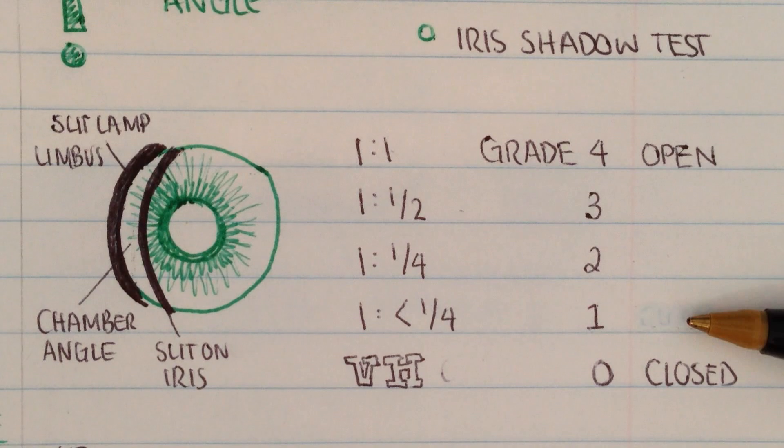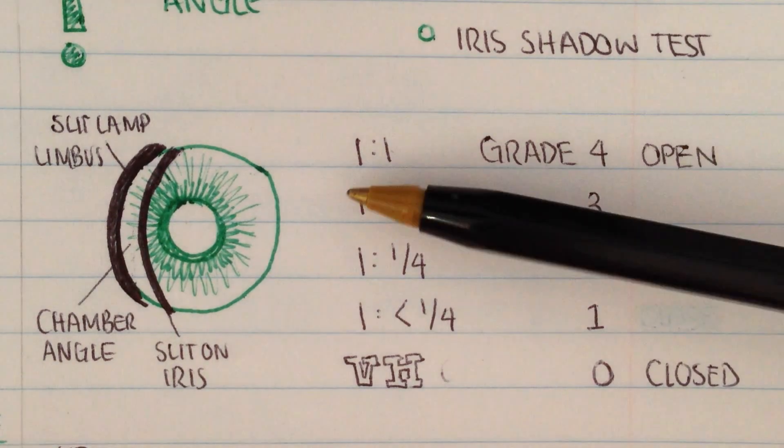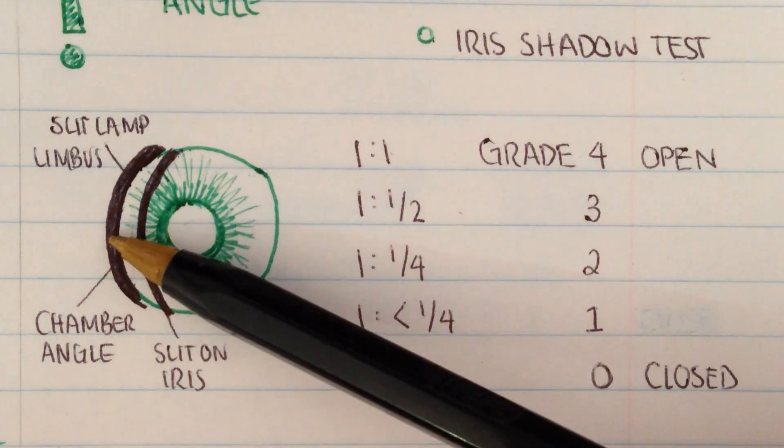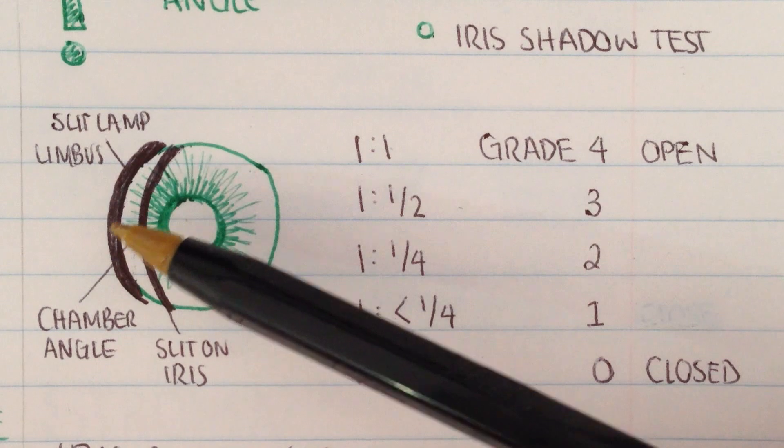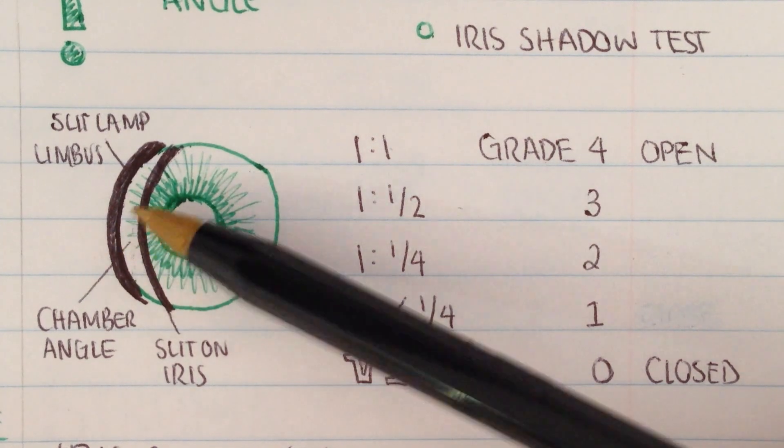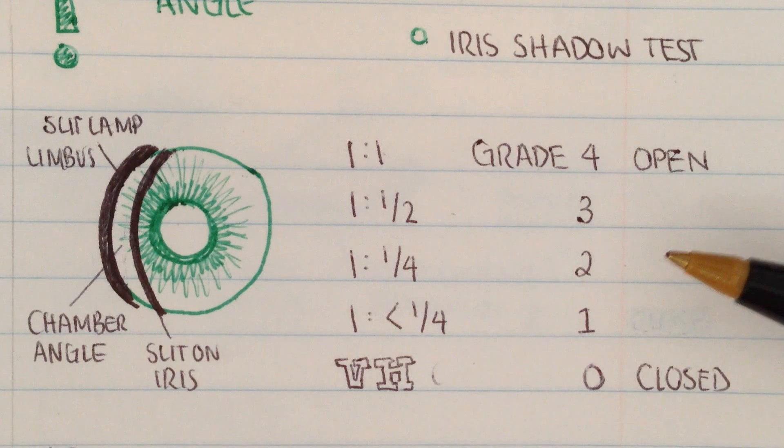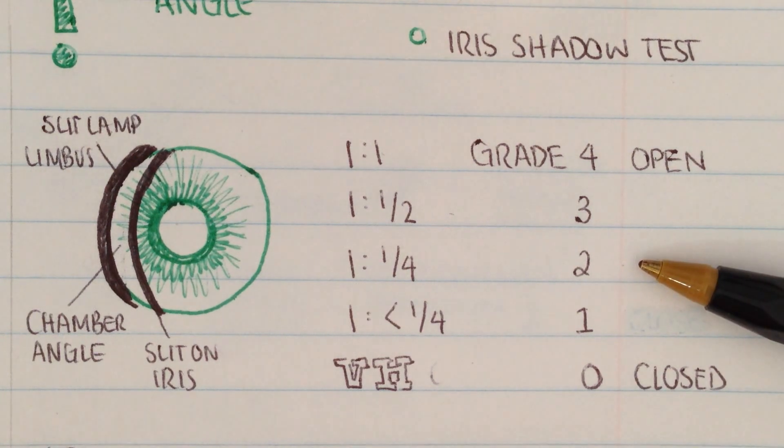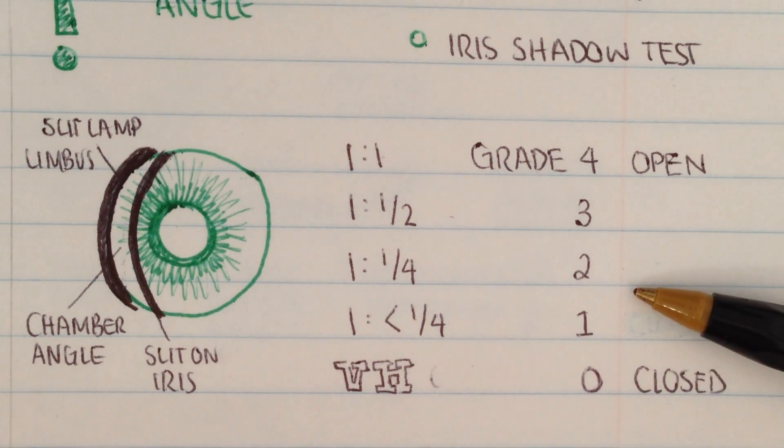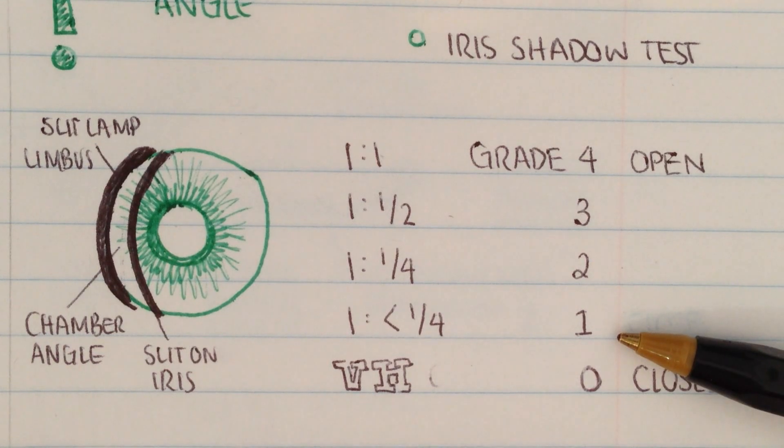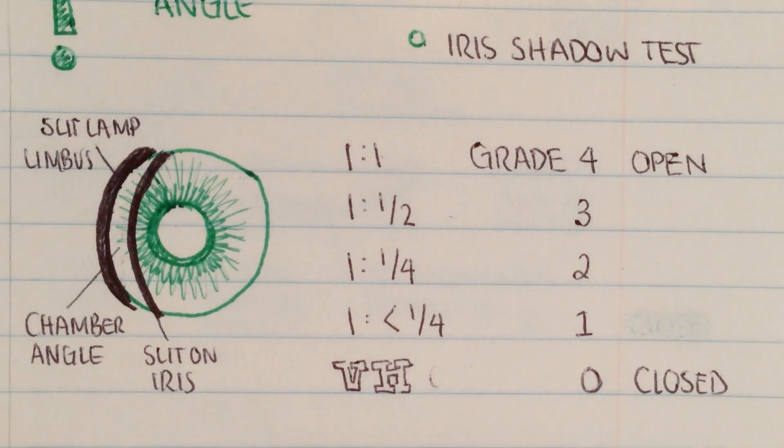We have the grading system to the side here. You've got grade 4, which is a 1 to 1 ratio. So the width of the light on the cornea is 1, and the width of the chamber angle is also 1. Grade 3 is 1 to 1 half. Grade 2 is 1 to 1 quarter. This is when angle closure becomes possible and why we need to perform gonioscopy. Grade 1 is when it's likely that the angle is going to close, and grade 0 is when it's completely closed.